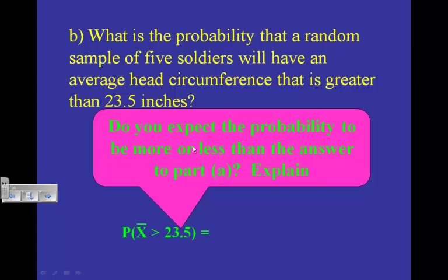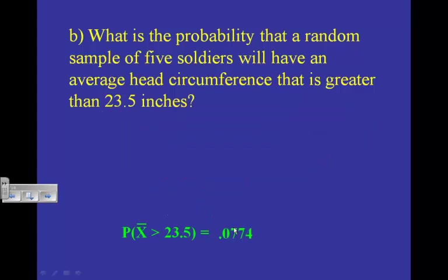In part A we had a standard deviation of 1.1. Now we have a standard deviation much less than 1.1 — it's much more tightly grouped. So it's much more unlikely to get five soldiers all with heads that big, compared to a single soldier. The probability will be much smaller than it was previously.